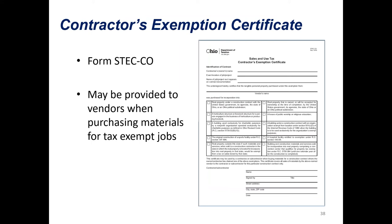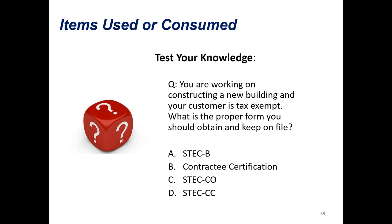The next form commonly seen is the STEC-CO. It's very similar to the STEC-CC except there are a few key differences—there's only a signatory line for one person. If you're a contractor and you didn't get the STEC-CC signed but you know the contract is exempt, you can fill out the STEC-CO yourself without needing your customer to sign it. However, one important caveat: this form does not protect you in an audit situation if you misclassify the job. If it's not truly a tax-exempt job, this form would not protect the contractor. So you want to make sure the job is tax-exempt.